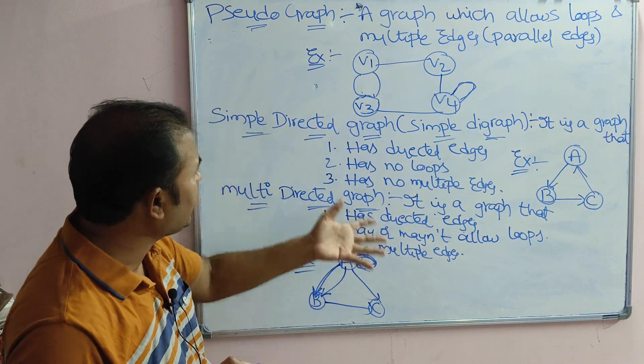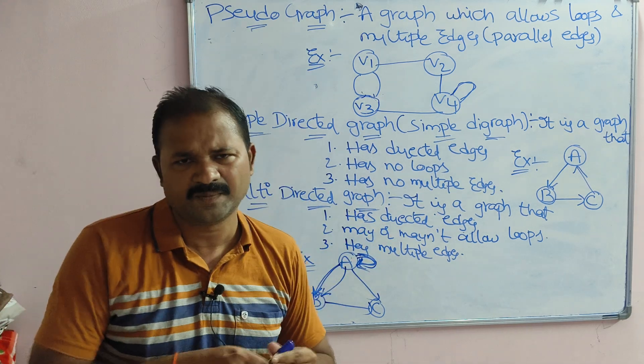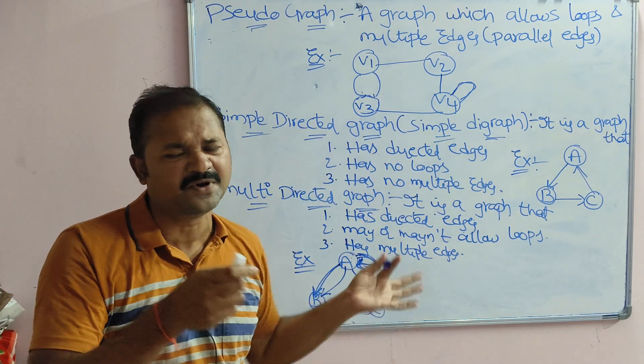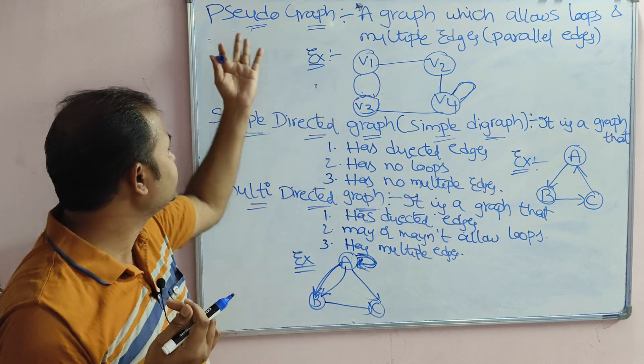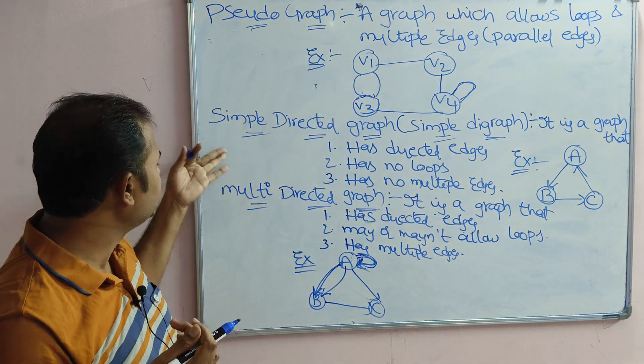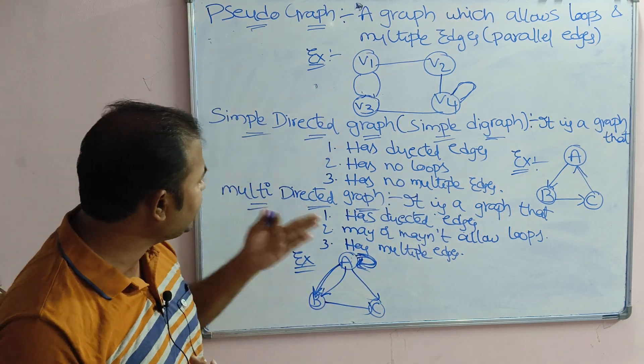So that is about pseudograph, simple directed graph, and multi directed graph. By observing the name, we can easily determine what each graph type is: pseudograph, simple directed graph, and multi directed graph.